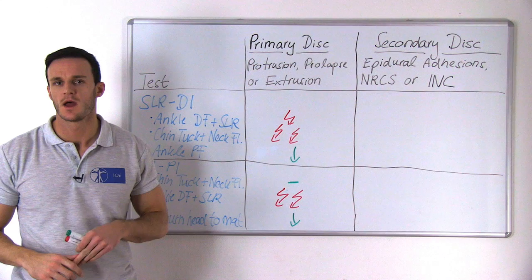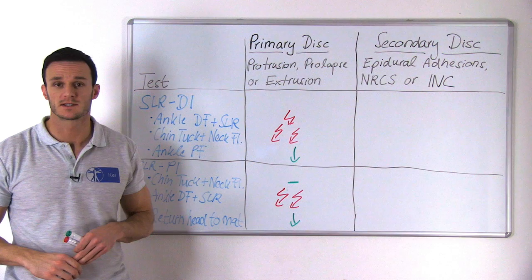With late primary or secondary disc-related disorders, such as epidural adhesions, nerve root compression syndrome, or intermittent neurogenic claudication, which often happens with lumbostenosis, the provocation is direction-dependent.